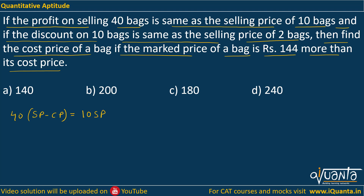Solving this further, we get 30 SP equal to 40 CP, or we can write SP equal to 4 CP by 3. This is the first equation we get.